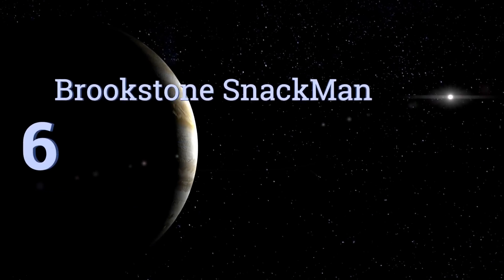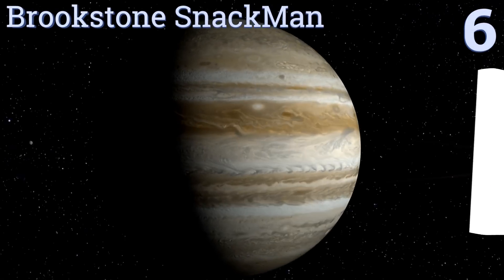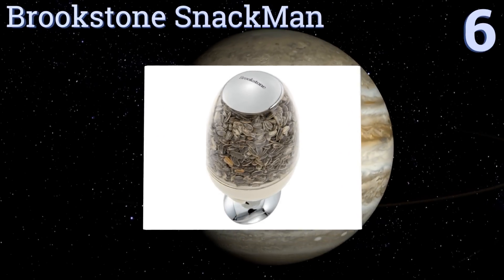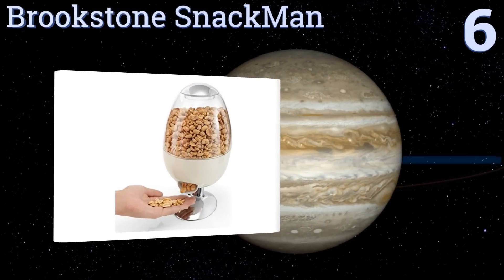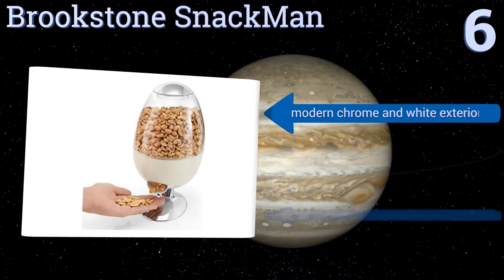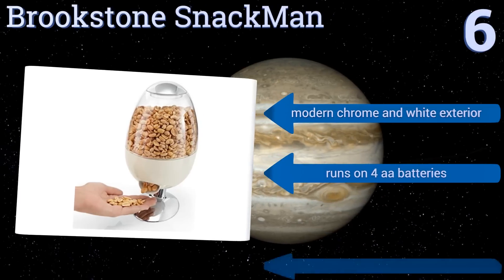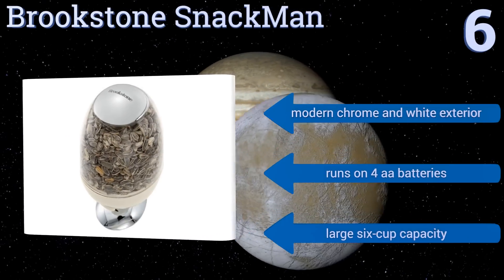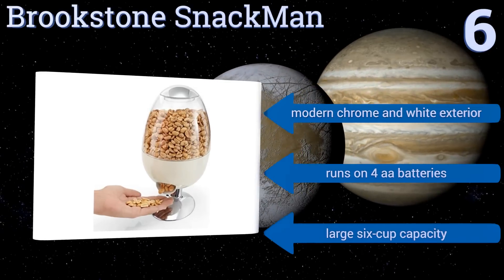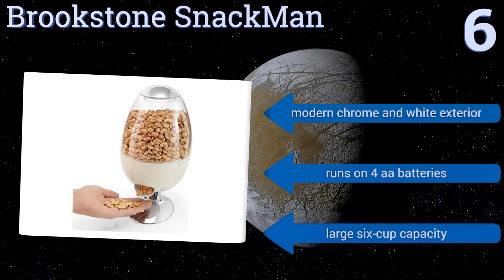Moving up our list to number 6. If you're a germaphobe, the Brookstone SnackMan is the perfect high-tech contraption for you. It has three preset serving sizes with a motion-activated sensor that accurately detects your hand under the spout to automatically serve up your next tasty treat. It features a modern chrome and white exterior and a large six-cup capacity. It runs on four AA batteries.